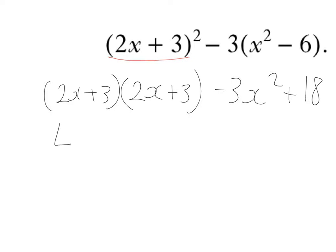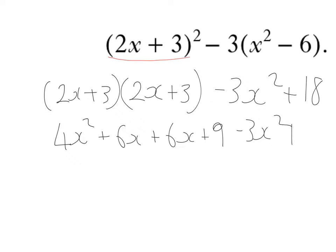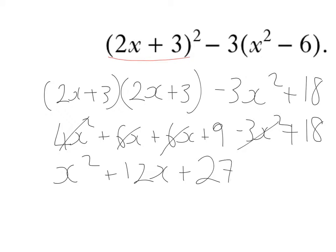2x times 2x is 4x squared. 2x times 3 is 6x. 3 times 2x is 6x again. 3 times 3 is 9. I'm still subtracting 3x squared and adding on 18. Collecting together like terms: 4x squared take away 3x squared is x squared, 6x plus 6x is 12x, and 9 plus 18 is 27, and that is the final answer.